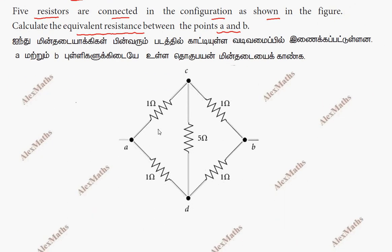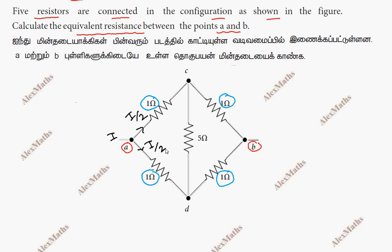If you look at point A, point B is connected. 5 resistors are connected, each with the same value: 1 ohm, 1 ohm, 1 ohm each. Now, suppose the current branches — if current branches, it splits. Suppose total current is i, then each branch carries i by 2. This is i by 2. So if we look at the branch, current value is i by 2 and resistance is 1 ohm.